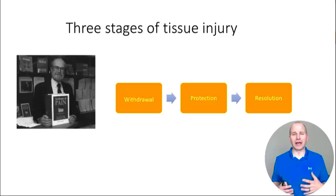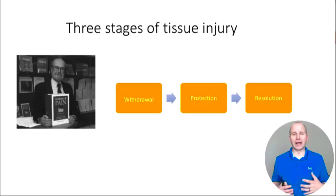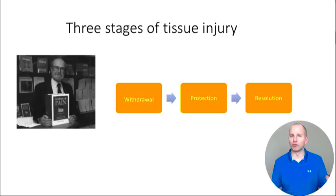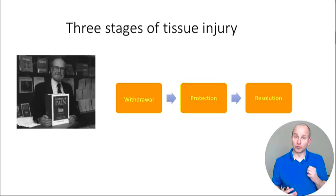Patrick Wall has a very helpful framework to think about tissue injury, and I get this from Jason Silverman — The Science of Suffering, his book on pain, is a wonderful book that I'd highly recommend. He talks about the three stages of pain: withdrawal from a tissue injury where you're pulling your hand off the burner or moving your body out of harm's way.